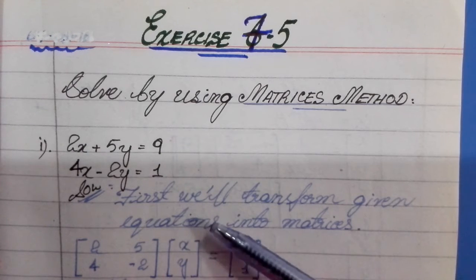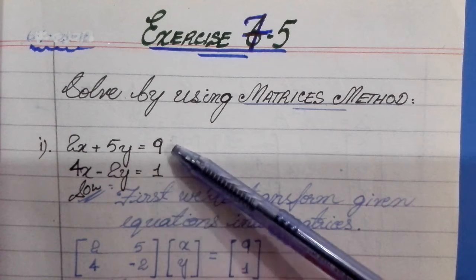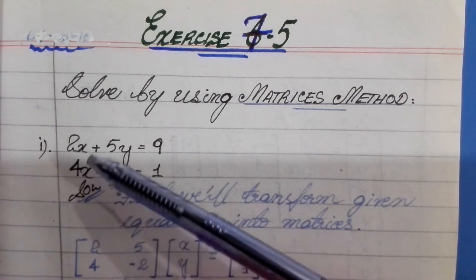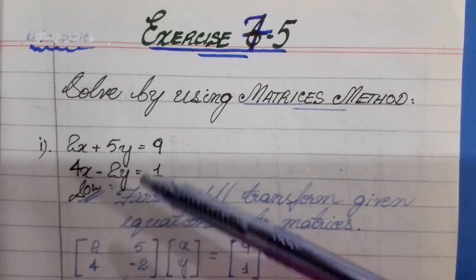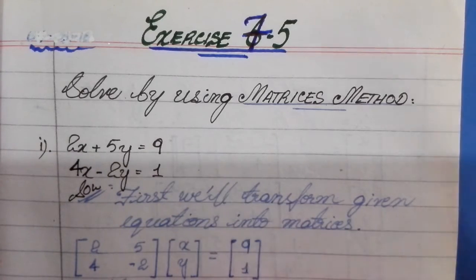First, we will transform the given equations into matrices. We will convert these two equations in matrices form: one matrix of coefficients, one matrix of variables, and one matrix of constants.